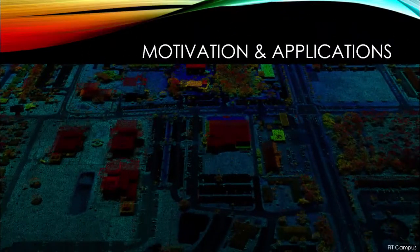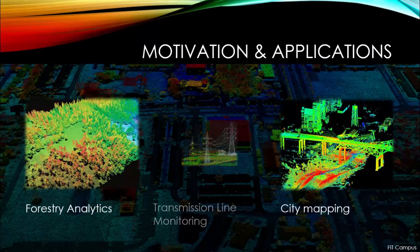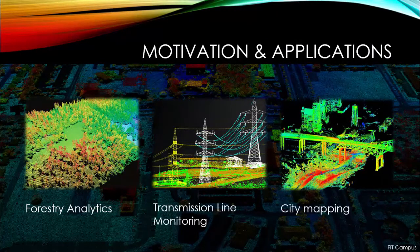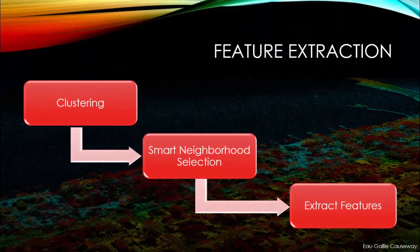Potential applications for automated feature extraction include forestry analytics, city mapping, and transmission line monitoring. Our experimental method has three main steps: first is clustering, then smart neighborhood selection, and finally extracting features of the resulting clusters.